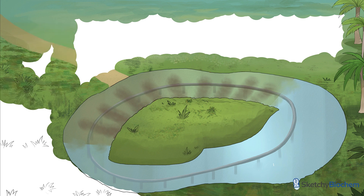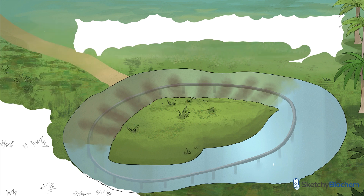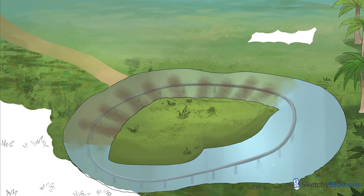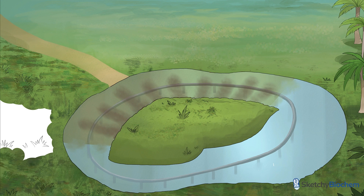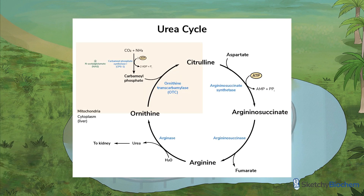Anyways, in this sketch we'll talk about the urea cycle, hyperammonemia, and OTC deficiency. The urea cycle is a series of biochemical reactions that convert toxic ammonia to non-toxic urea, so it can be excreted in the urine. The urea cycle occurs in the liver, and to a smaller extent, in the kidneys.